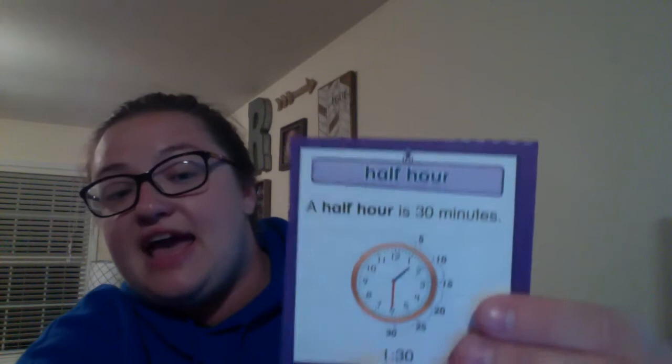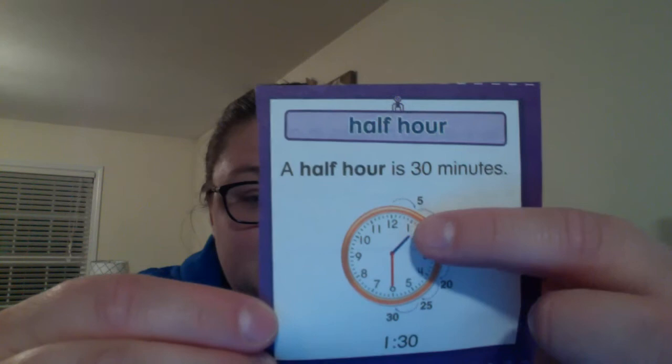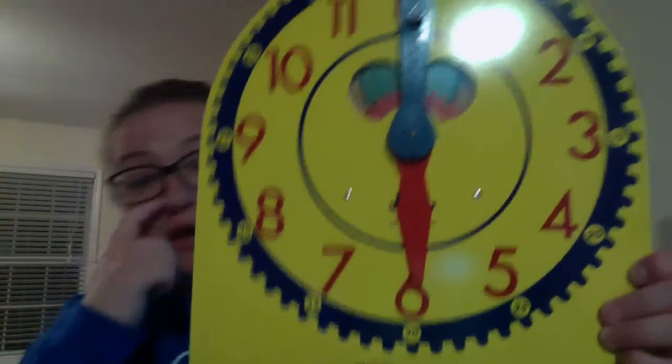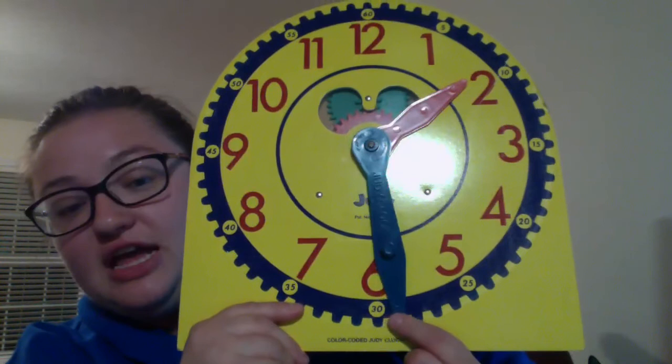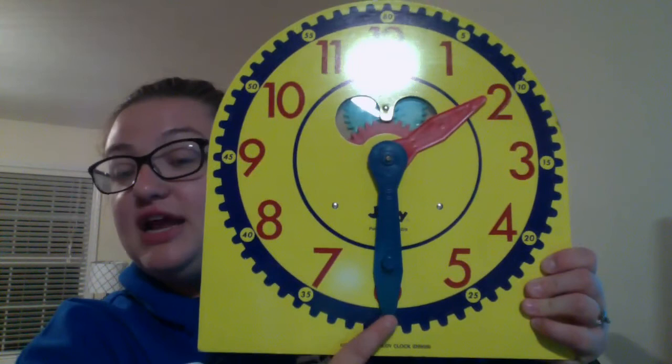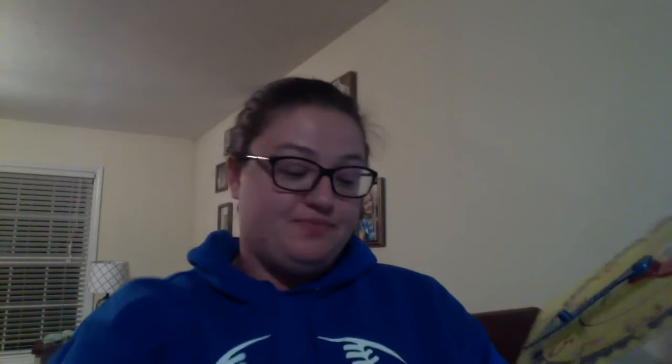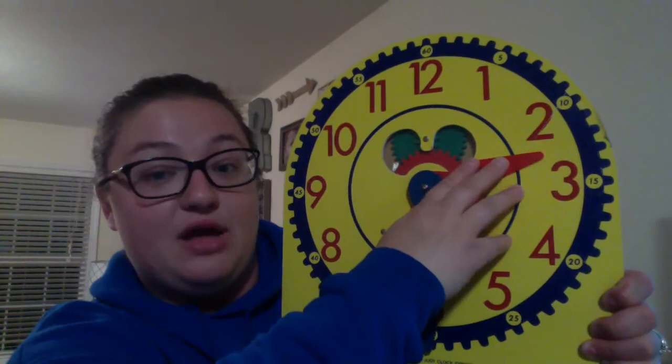Our last vocabulary word is half hour. A half hour is 30 minutes. Here it shows the hour hand is between the one and the two, and the minute hand is on the six. On my Judy clock, when the minute hand is on the six, the number shown is 30. So a half hour is 30 minutes — anytime it's a half hour, the minute hand will be on the six. For example, at 2:30, the hour hand is between the two and the three, and the minute hand is still on the six.